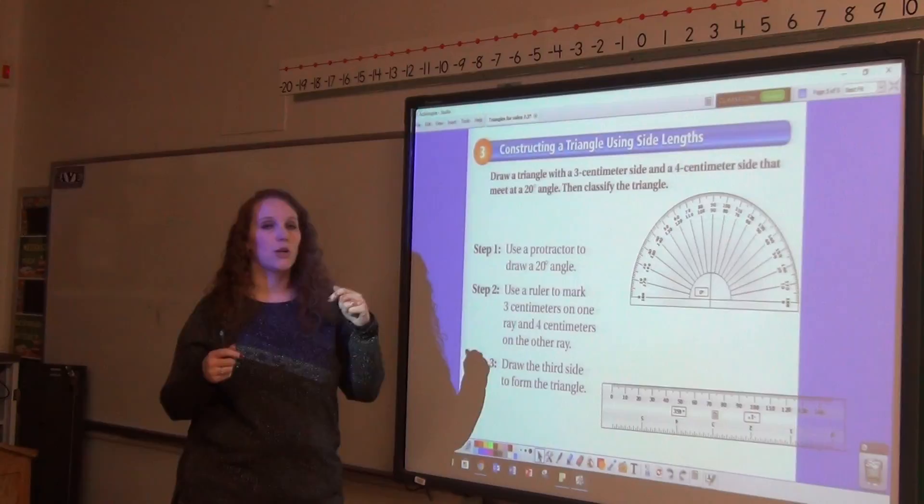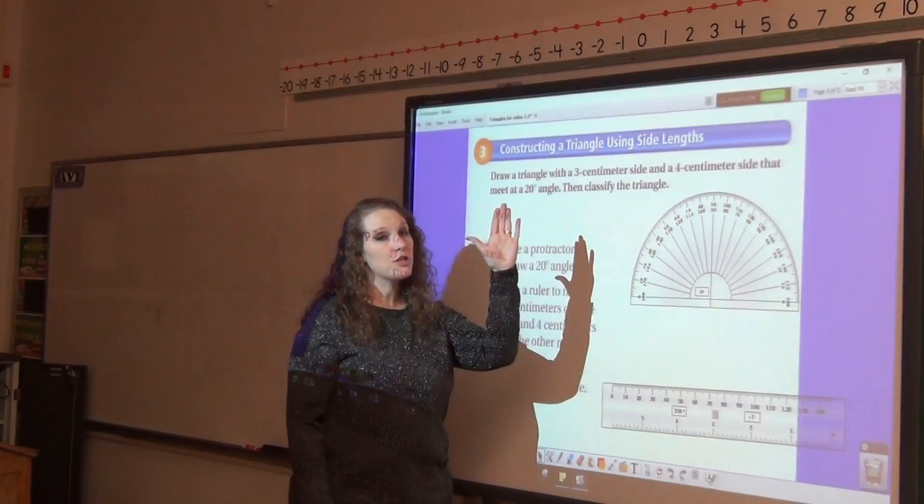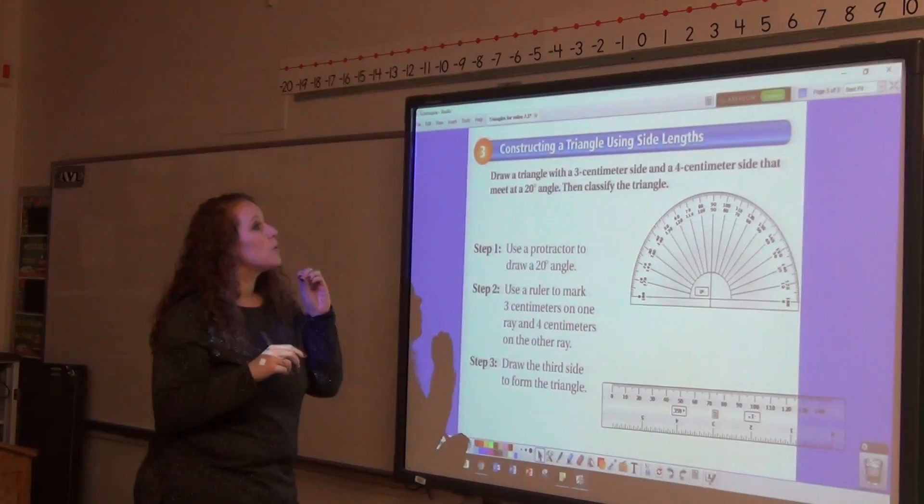So I'm going to tell you how to do it. I want you to go home and actually do it. This says draw a triangle with a 3-centimeter side and a 4-centimeter side that meet at a 20-degree angle. That means you'll have a 3-centimeter side and a 4-centimeter side, like that, and this angle that they meet at is going to be 20 degrees.